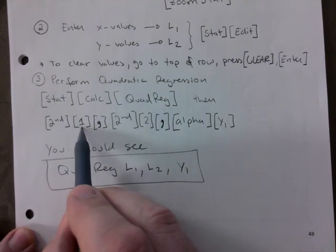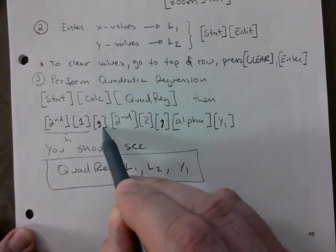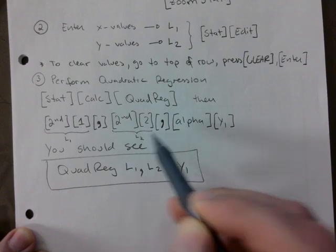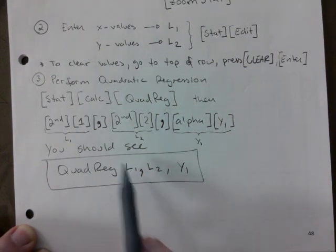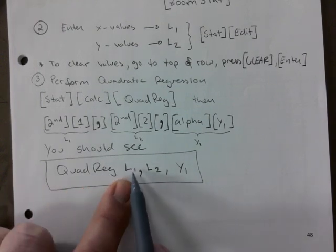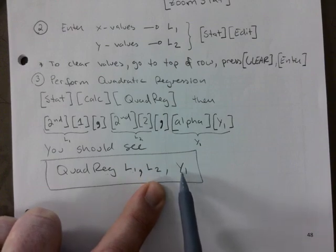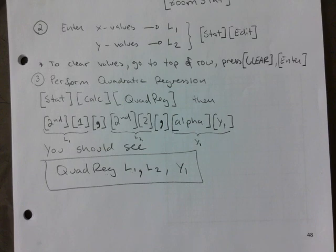Just so you know: Second 1 calls L1, comma is the comma button, Second 2 calls L2, and Alpha Y1 calls Y1. You're basically saying: quadratic regression, get your x-values from L1 — it's like an Excel spreadsheet — get your y-values from L2, and paste the equation you come up with into Y1. Those are the commands; it's almost like a little program you're running.